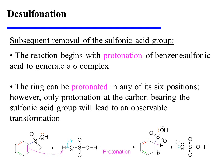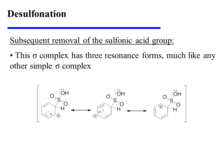The reaction begins with the protonation of benzene sulfonic acid to generate a sigma complex. The ring could be protonated in any of its six positions. However, only protonation at the carbon bearing the sulfonic acid group will lead to an observable transformation. As expected for any sigma complex, this sigma complex also has three resonance forms that delocalize the positive charge to three locations on the ring.